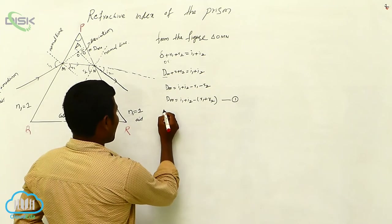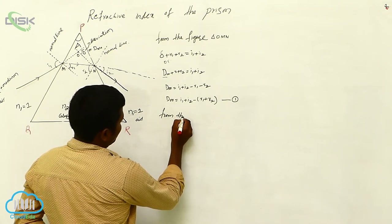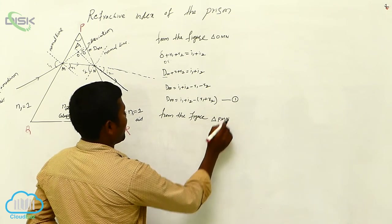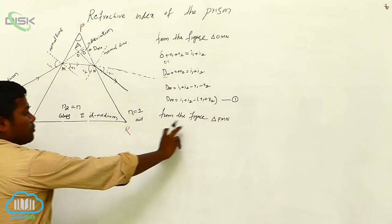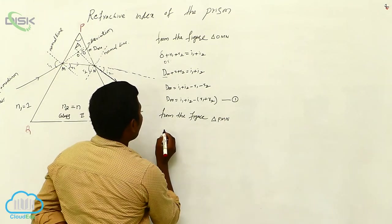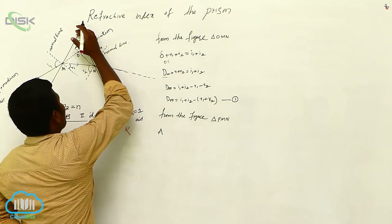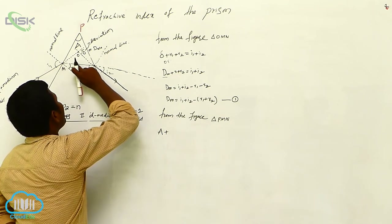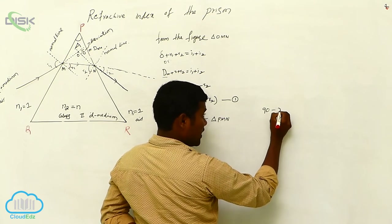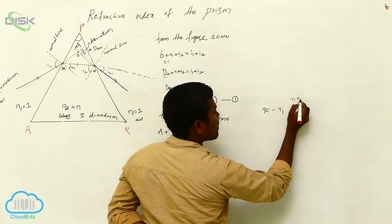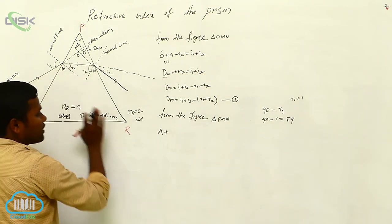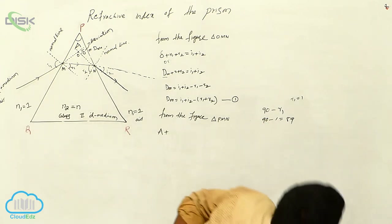From the figure, I consider another triangle: P, M, N. At this triangle, angle A is there at the top. At point M, the angle inside the triangle is 90 minus R1 — because the normal is 90 degrees and R1 is the refraction angle, so the remaining angle in the triangle is 90 minus R1. Similarly at point N it will be 90 minus R2. So in triangle PMN: angle A plus (90 minus R1) plus (90 minus R2) equals 180 degrees, giving A equals R1 plus R2.